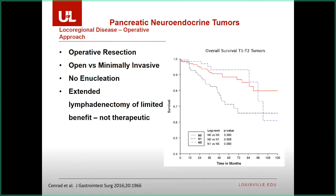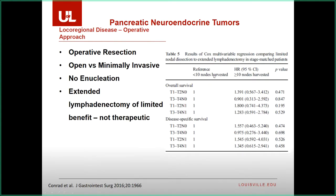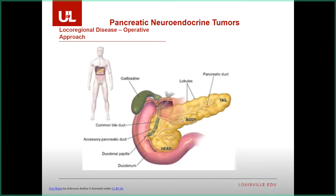From SEER data, the red line shows node-negative and green line node-positive patients — there is a definite difference in recurrence and survival with positive lymph nodes. The NX group (blue line) — people with no lymph nodes sampled, essentially enucleations — had survival basically the same as N0. Using a cutoff of 10 nodes harvested, there was no difference in survival between extended and limited lymphadenectomy. You don't have to go crazy getting lymph nodes, but you should sample them because it has prognostic significance.